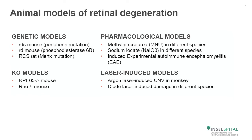Animal models of retinal degeneration come in different flavors. You have, for instance, the genetic models, the knockout models, the pharmacological models, and the laser-induced models. I would like to talk today about some pharmacological models, like the sodium iodate model in different animal species, and also the model of experimental autoimmune encephalomyelitis, which has its origin in the brain, but where you can also measure effects in the retina.